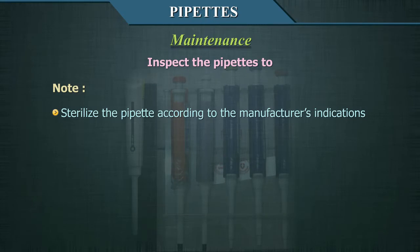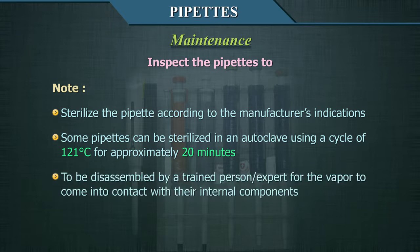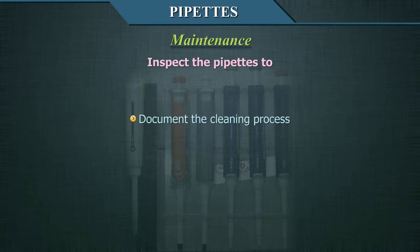Sterilize the pipette according to the manufacturer's indication. Some pipettes can be sterilized in an autoclave using a cycle of 121°C for approximately 20 minutes. Some will need to be disassembled by a trained person for the vapour to come into contact with their internal components. If a pipette has been used with harmful substances, it must be completely decontaminated before being used in other procedures or removed from the laboratory. Document the cleaning process.